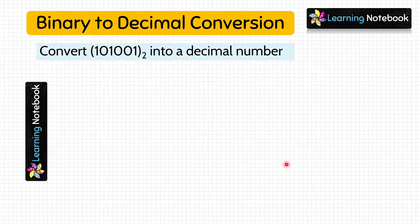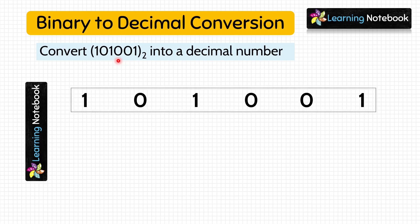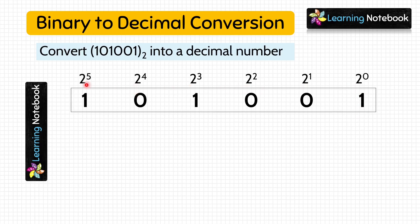Next question: convert binary number 1010001 into a decimal number. Following the same three steps, in step 1 we write the place values of all digits from right to left: 2⁰, 2¹, 2², 2³, 2⁴, and 2⁵. We have now written the place values of all the digits.